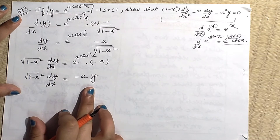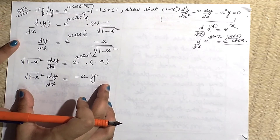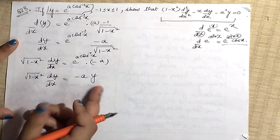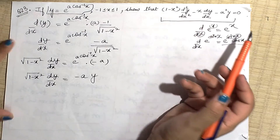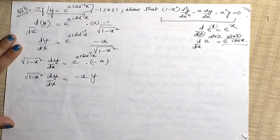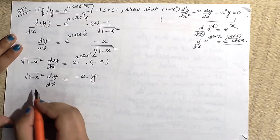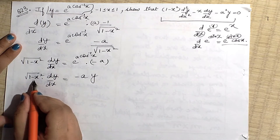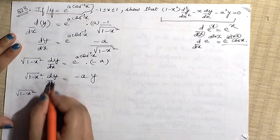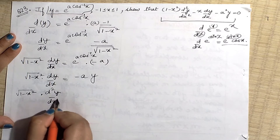Now we need the second order derivative. So differentiate the whole equation √(1−x²) · dy/dx = −ay again with respect to x. On the left hand side we apply the product rule: first function √(1−x²) as it is, times d²y/dx²; plus dy/dx times the differentiation of √(1−x²), which is 1/(2√(1−x²)) times the derivative of (1−x²).